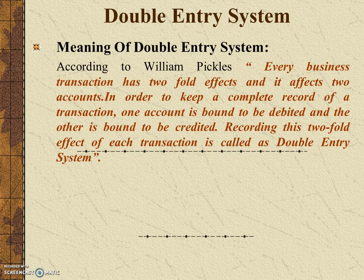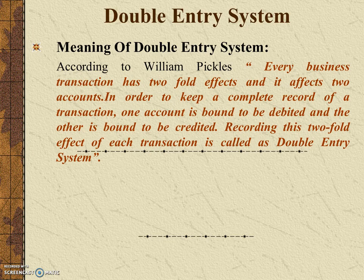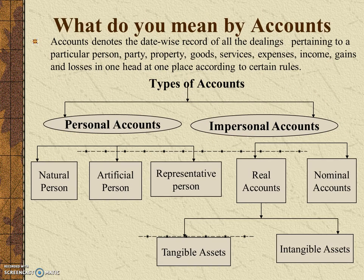As we know, every transaction has a dual effect. In that case, one account has to be debited and the other account has to be credited. This debiting and crediting of accounts is called the double entry system. To record transactions under the double entry system, we should first know the types of accounts.